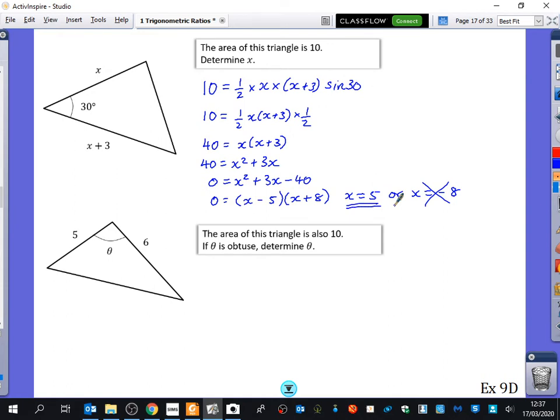This one says that the area of this triangle is also 10. If theta is obtuse, determine theta. So I'm going to start off with the same idea that 10 equals, and again, I've got a side, a side, and I've got the angle in between them. That's how you can use this if you have the two sides and the angle in between. A half times 5 times 6 times the sine of theta. So I've got that 10 equals 15 sine of theta. 10 divided by 15. I don't know why I'm using my calculator. Two thirds is sine of theta. And so theta is the inverse sine of two thirds. Which is 41.8 degrees.